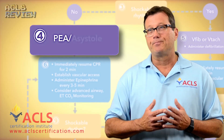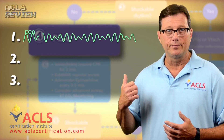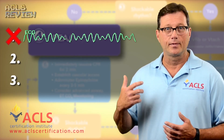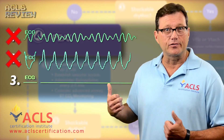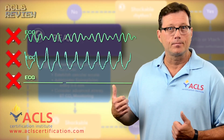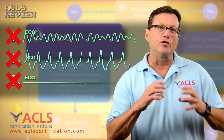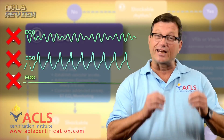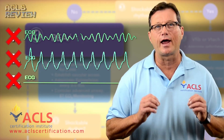There are three rhythms that can't be PEA: V-fib, V-tach, and asystole. Why? Because we wouldn't expect a pulse with these rhythms. PEA is an organized electrical activity where we expect to see a pulse but we don't have one.